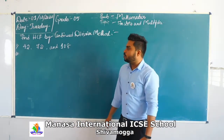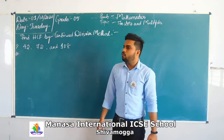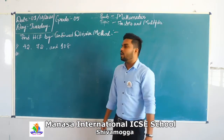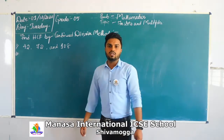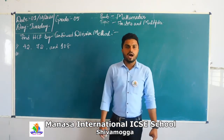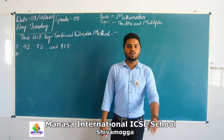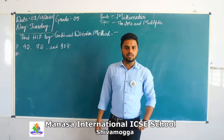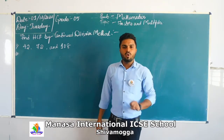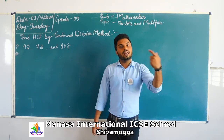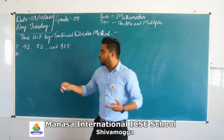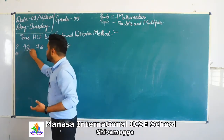Today the question asks us to find the HCF of 42, 72, and 108 — three terms. Now I am going to take only two terms first: 42 and 72. Later I will take the third term, 108.